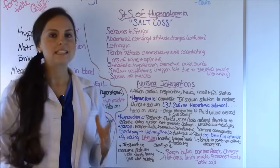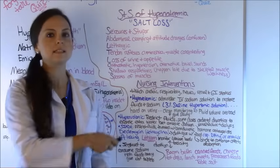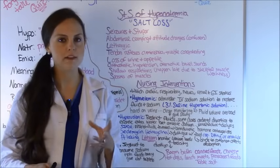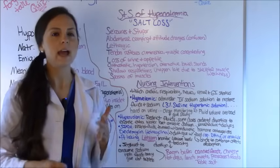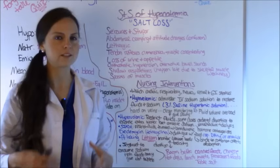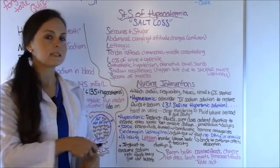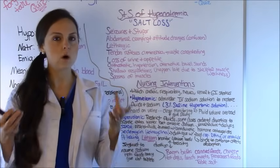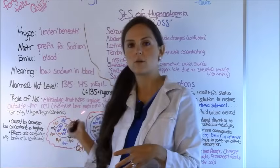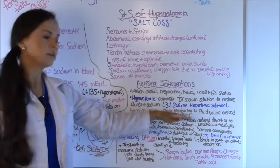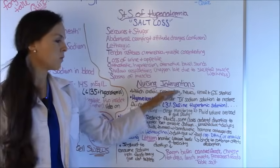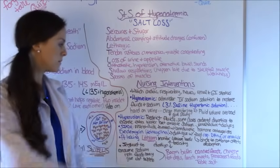Typically what is given is 3% saline — this is a hypertonic solution, so commit that to memory. This solution is hard on the veins and is typically given through a central line, usually in an ICU where the nurse can closely monitor the patient. Since it's a hypertonic solution, it works by shrinking the cell down and pulling fluid out of the swollen cell. If you do this too fast, you can cause the patient to go into fluid volume overload, so give it slowly.